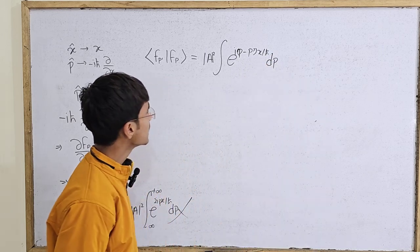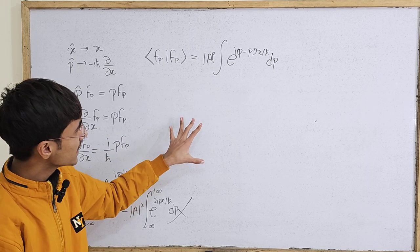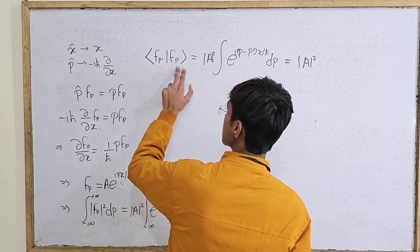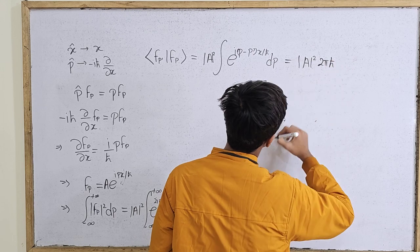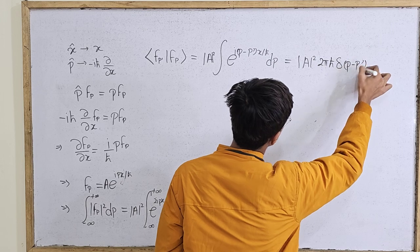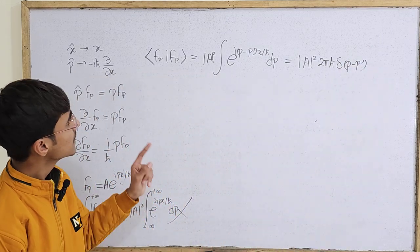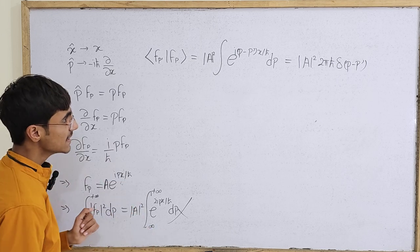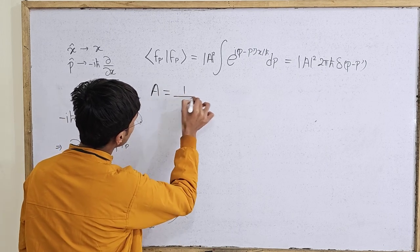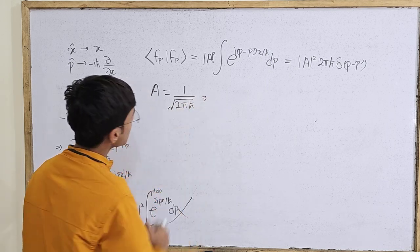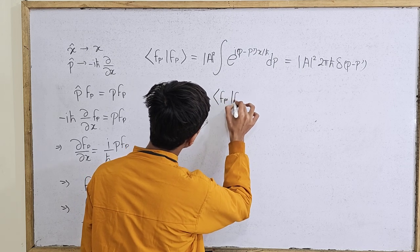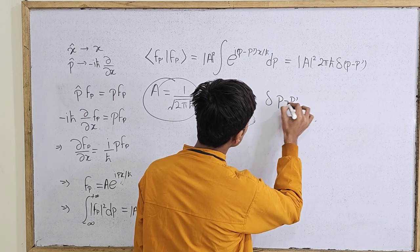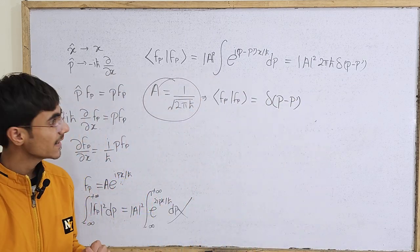Consider two eigenfunctions f_{p'} and f_p. Their inner product is |A|² times the integral of e to the power iota times (p minus p') x over h-bar dx from negative to positive infinity. Carrying out that integral, the result is |A|² times 2π h-bar times the Dirac delta of (p minus p'). Choosing the normalization constant A equal to one over the square root of 2π h-bar, the inner product of f_{p'} and f_p becomes simply the Dirac delta of (p minus p').